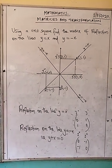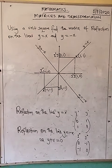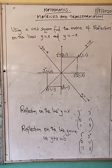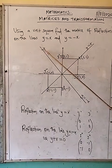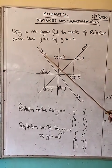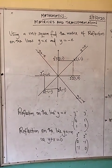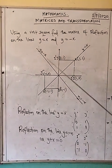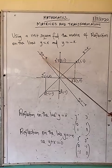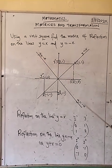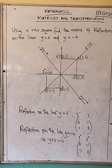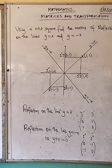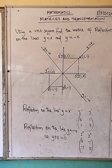The same can be done for a reflection on the line y equals negative x. The first step is to draw the line y equals negative x, and realize that that line has a negative gradient, while the line y equals x has a positive gradient.